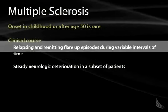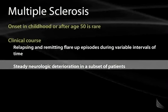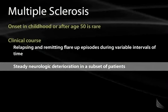The clinical course is relapsing and remitting — flare-up episodes during variable intervals of time. There is also a steady neurologic deterioration in a subset of patients, and those are not relapsing-remitting, but are primary or secondary progressive patients.